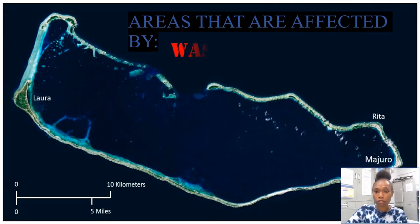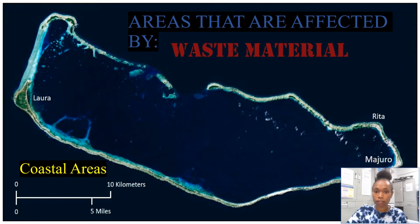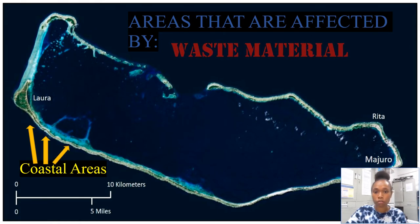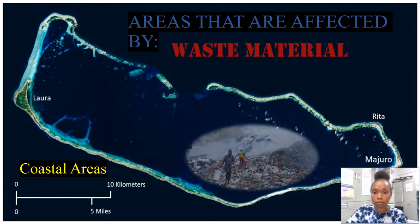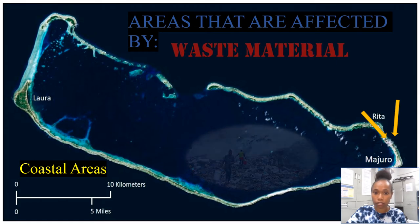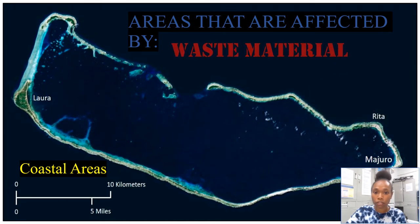Waste materials can be found mostly on the coastal areas of the Marshall Islands. This occurs because of poor waste management practices and the improper disposal of waste materials by individuals. The waste can harm the environment by destroying habitats of marine organisms, increasing nutrients, lowering water quality, and coral bleaching.